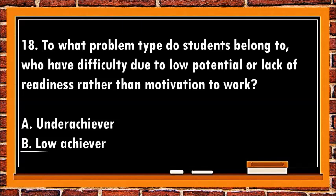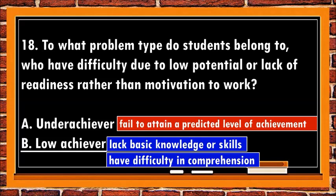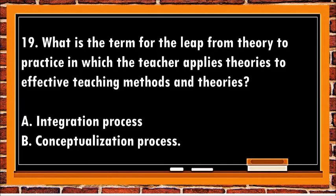The best answer is b. Low achiever. There's a difference between a low achiever and an underachiever. Low achiever learners lack basic knowledge or skills, have difficulty in comprehension, lack concentration, thus low potential or lack of readiness. While underachievers are learners who fail to attain a predicted level of achievement — caused by social issues, emotional sensitivities, unchallenging curriculum, undiagnosed learning disabilities, and unsupportive environments.